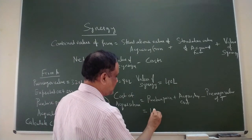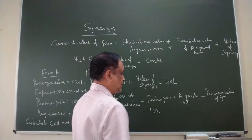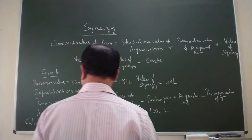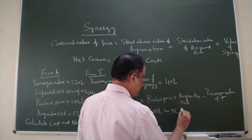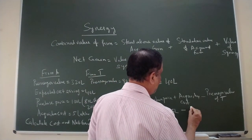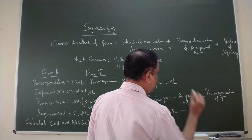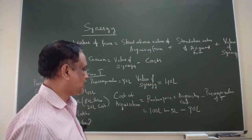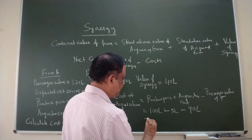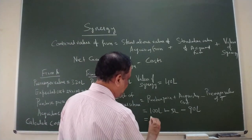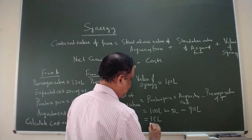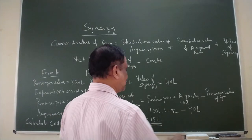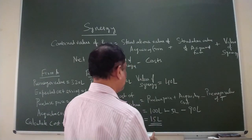We know purchase price which is 100 lakhs and acquisition cost is 5 lakhs minus pre-merger value which is 90 lakhs. That will give you cost of acquisition. This will be 105 lakhs minus 90, this will be 50 lakhs. 50 lakhs is the cost of acquisition.